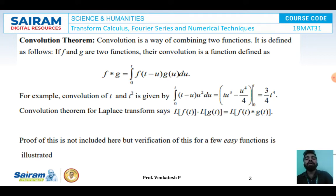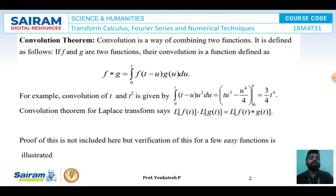For example, the convolution of t and t squared will be given as the integral from 0 to t of (t minus u) into u squared du. After solving this, we get t·u³ minus u⁴/4 with limit 0 to t. Applying the limit and simplifying, we get (3/4)·t⁴.